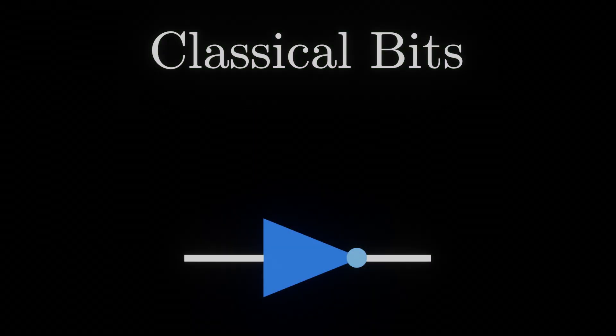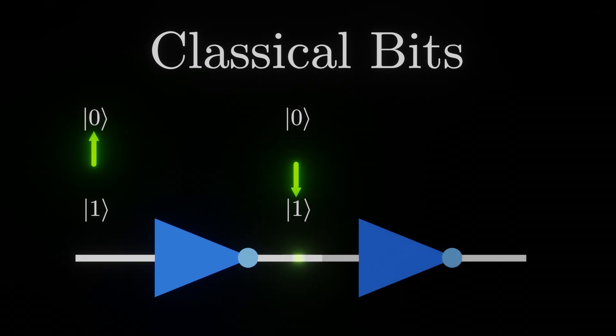For example, the NOT gate turns a 0 bit into a 1 bit, and vice versa.